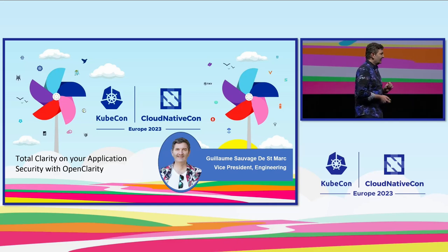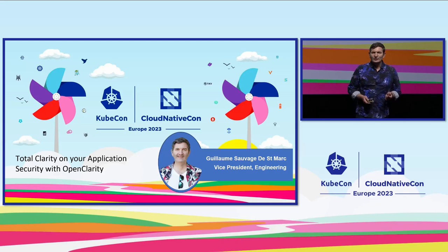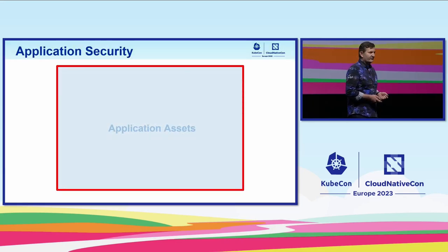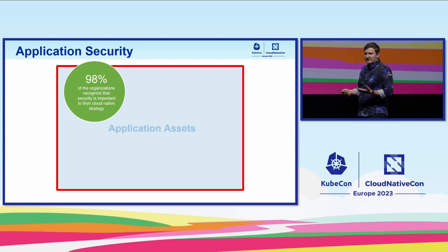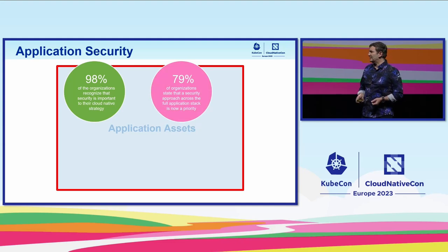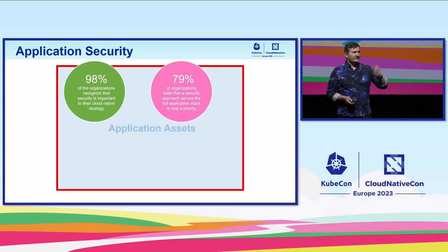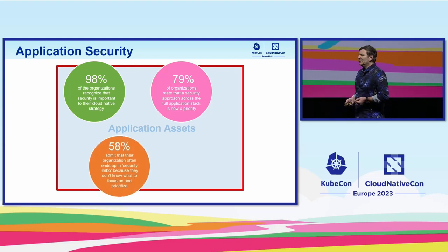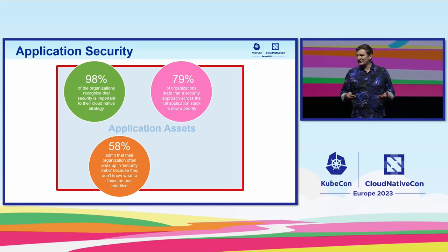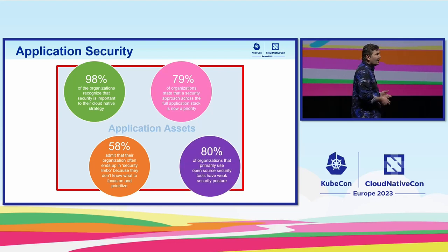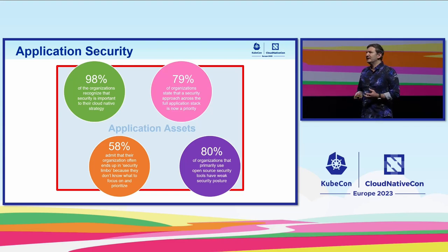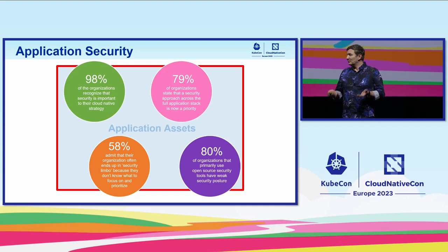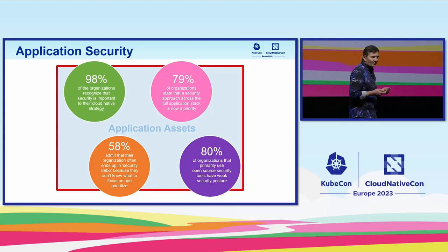No security, no application. No application, no business. No users. Not just me saying this — putting together a few data points for today: the vast majority of the industry acknowledges that security is key. Almost 80% of organizations recognize that it's important to look at security across the entire stack. But more worrying, almost 60% of organizations say they get rapidly lost, not sure where to look or what to prioritize. And 80% who are using open source primarily for their application security say they are not entirely comfortable with their security posture. So very simply, we need to keep pushing the envelope. We need to do more. We need to build more open source tools for security.